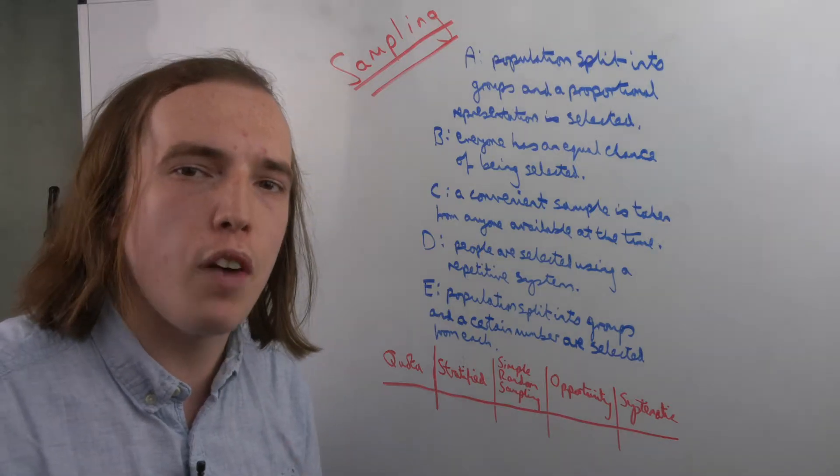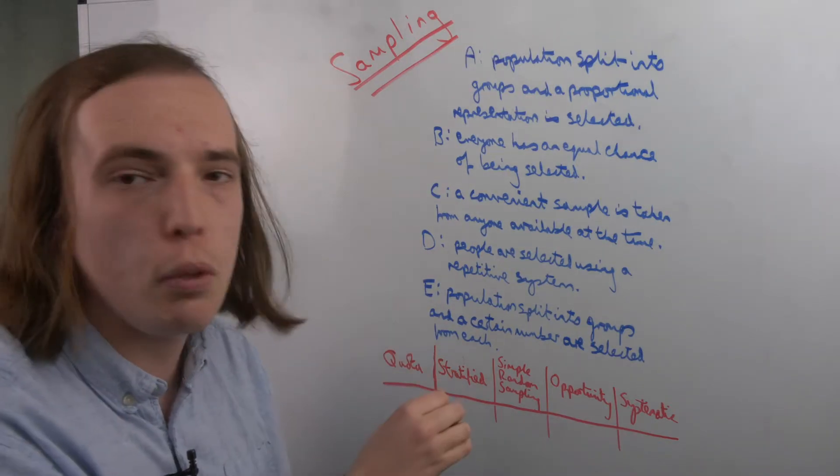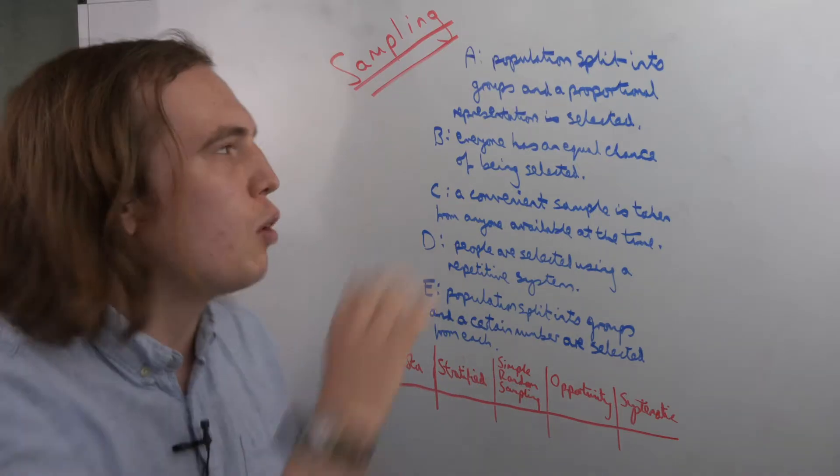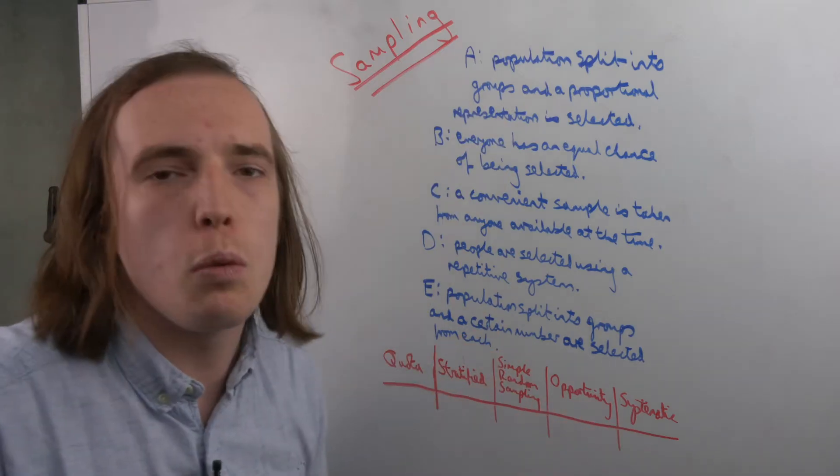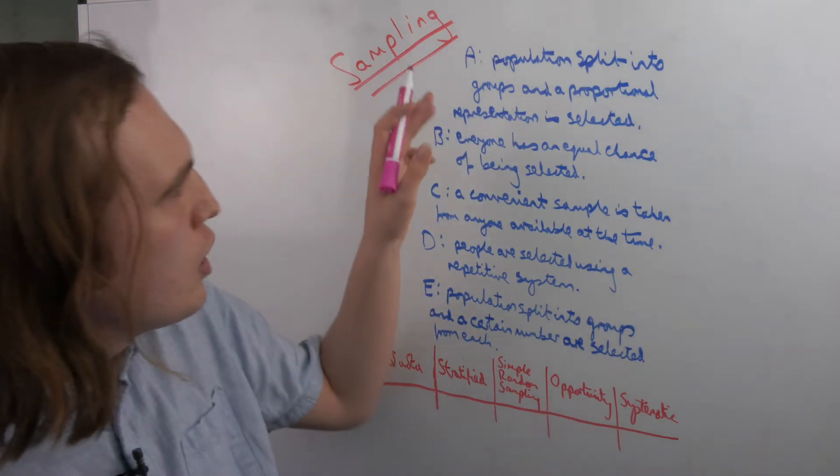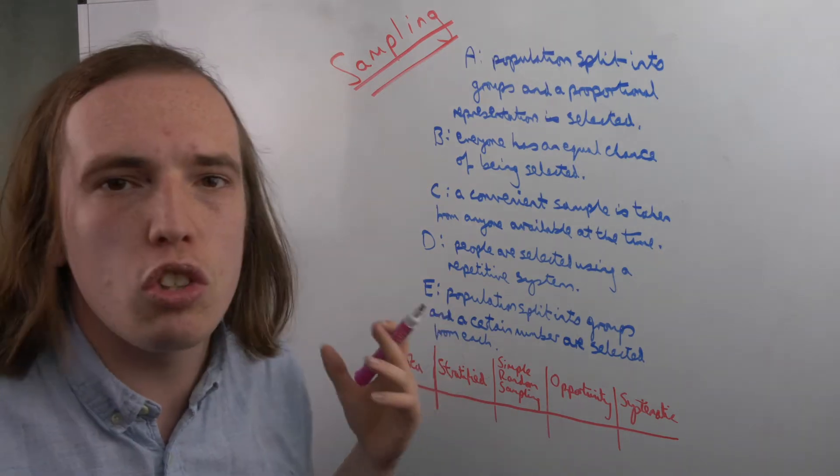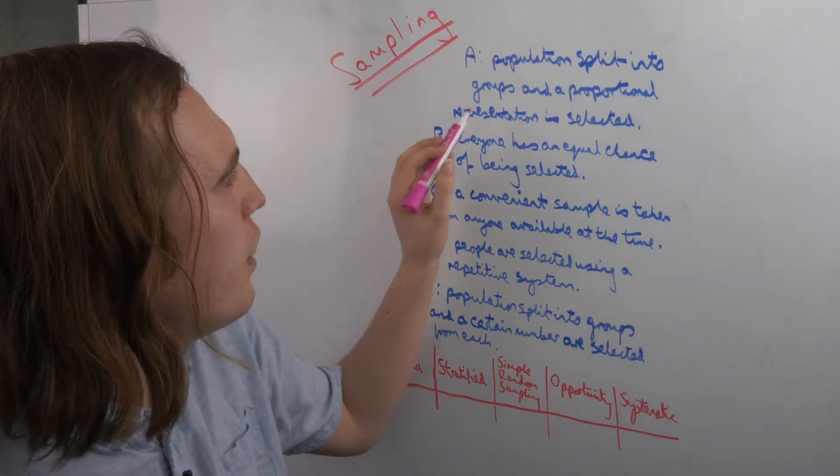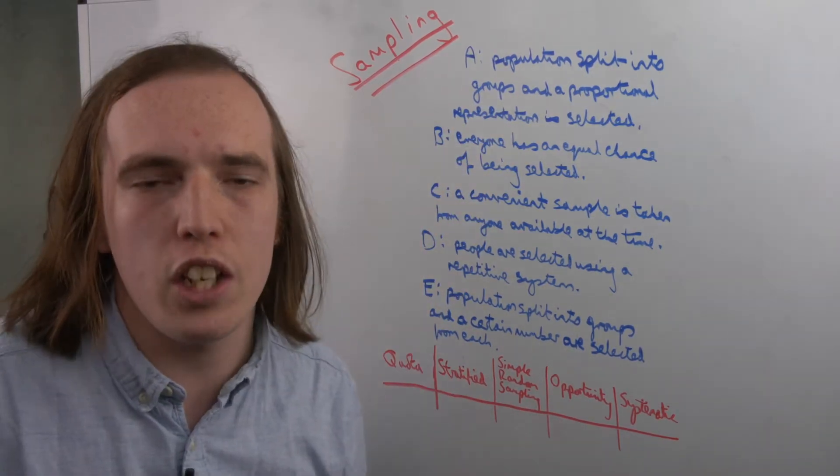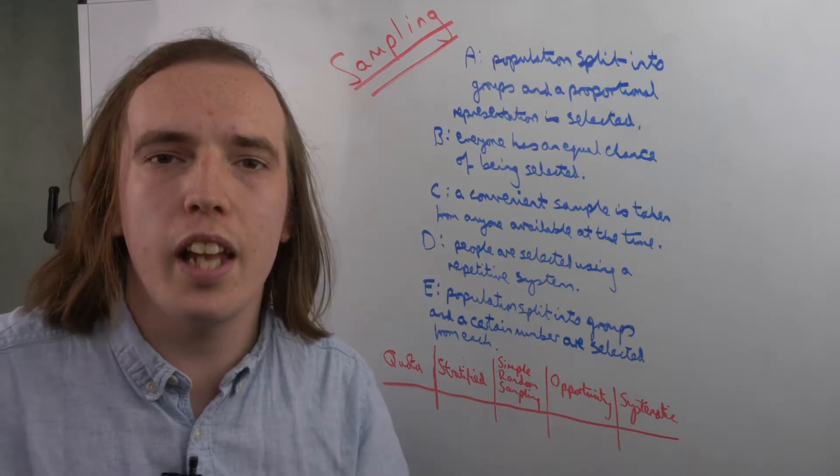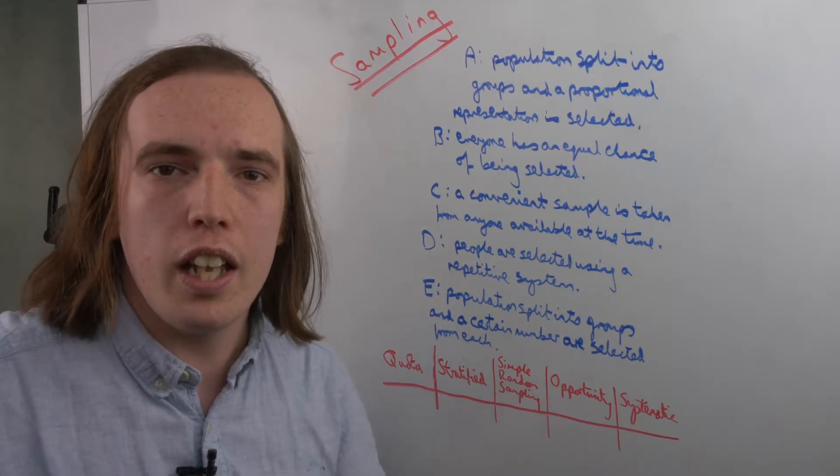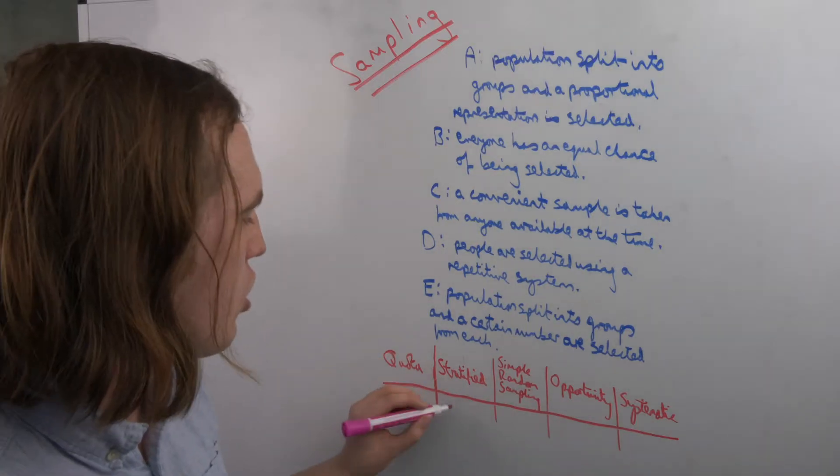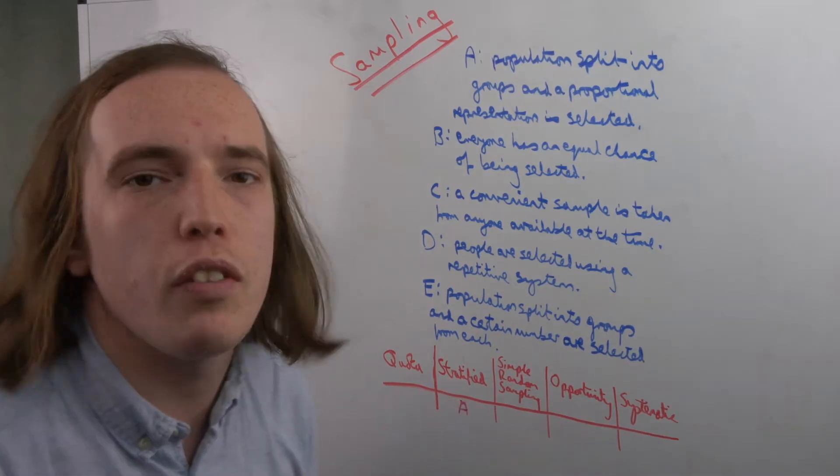Below this, we are given five options: quota, stratified, simple random sampling, opportunity, and systematic. And we have to identify which description matches which type of sampling. Well, splitting the population into groups is either going to be quota or stratified. And then we have a proportional representation. So the group that you're then selecting to take people from each of these groups, it's made up of proportions that reflect the original population. That's stratified. So stratified will be A.